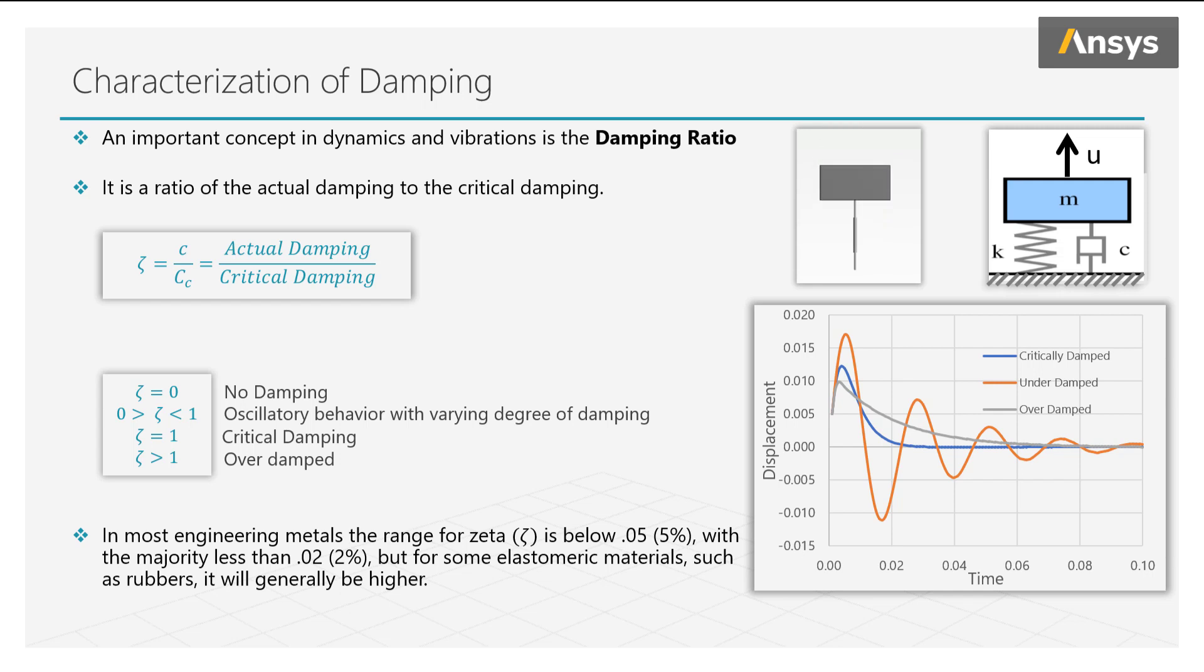Notice how the mass oscillates, but the vibration is quickly damped out. If we vary the amount of damping and plot the motion of the mass, we will end up with several types of behavior.